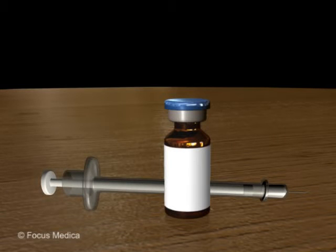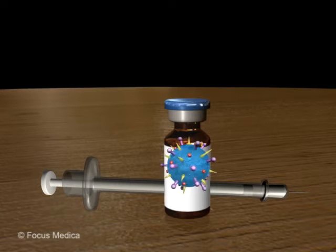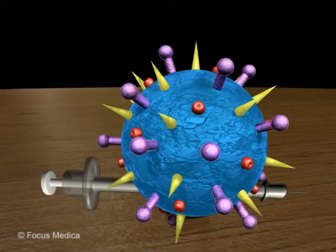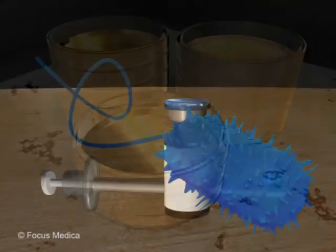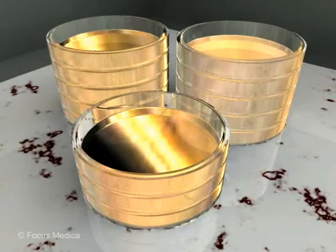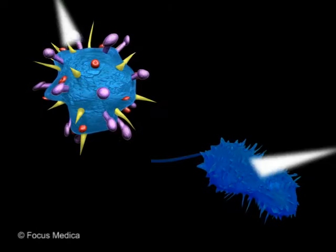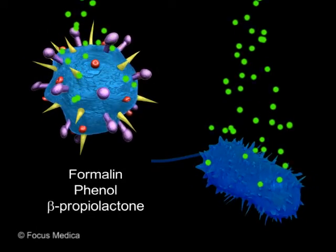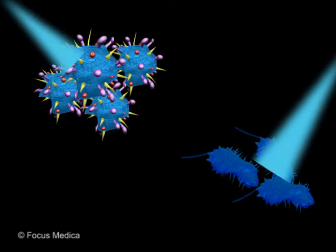Inactivated vaccines, or killed vaccines, are made up of pre-treated viruses or bacteria. The viruses or bacteria are grown in culture and are killed by use of heat, chemical, or UV irradiation.